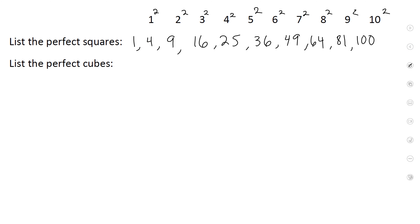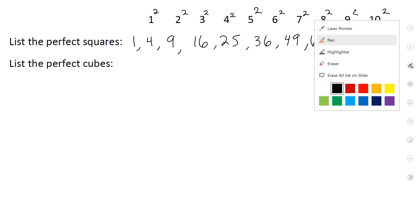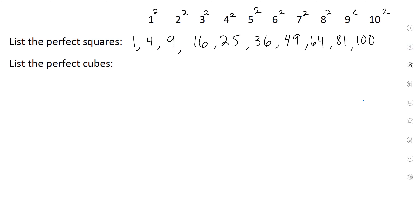Using five as an example: five times five gives 25. What if I multiplied by another five? That's 125 — a perfect cube. If you multiply five by itself three times, you get a perfect cube.